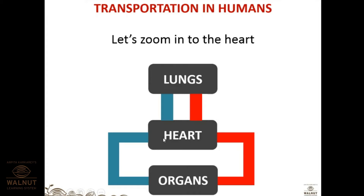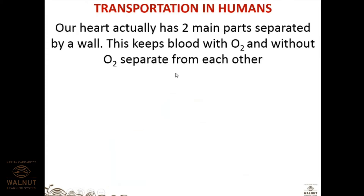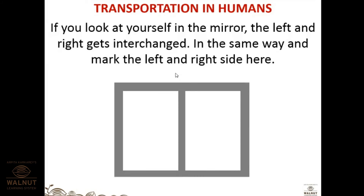Our heart has two main parts separated by a wall, keeping blood with oxygen and blood without oxygen separate. There should be no intermixing of blood — otherwise our energy requirements cannot be fulfilled. That is why it is very important that the heart has partitions.